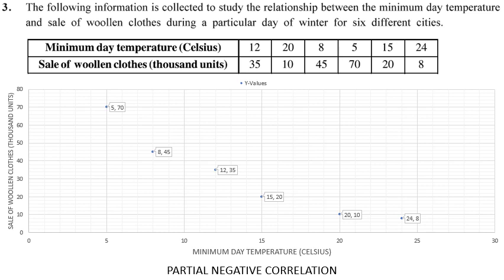This is the end of Exercise 2.1 for Chapter 2, covering the scatter diagram method for estimating the type of correlation. Please study this video carefully, as it provides introduction and definitions of correlation. Do all sums three times — once in your regular notebook and twice in your homework notebook. Next time, we will discuss Carl Pearson's product moment method.